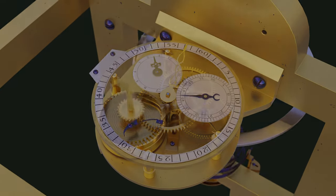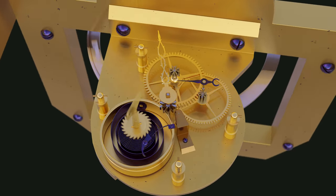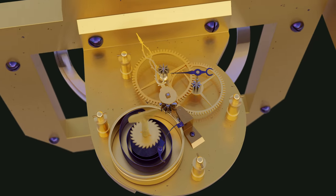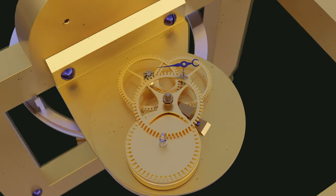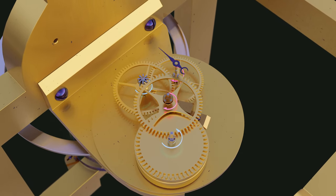The mechanism is composed by a mainspring barrel containing the mainspring allowing a charging time of 38 hours, followed in line by the first wheel, the intermediary wheel, the second wheel and the escapement wheel.